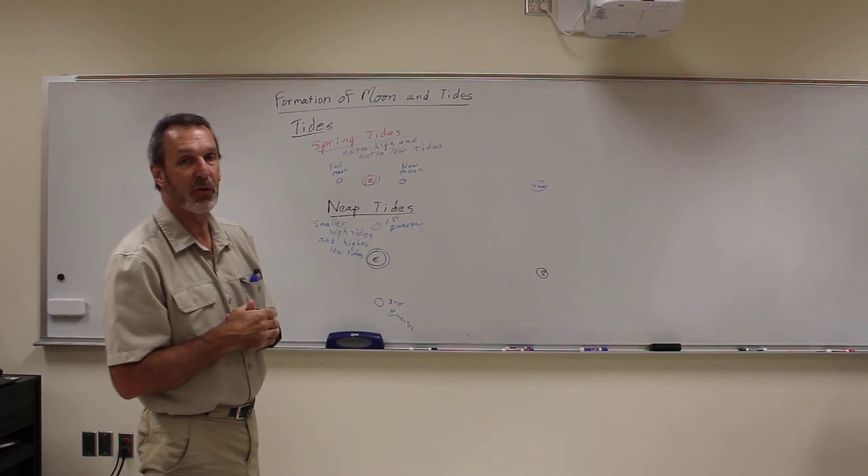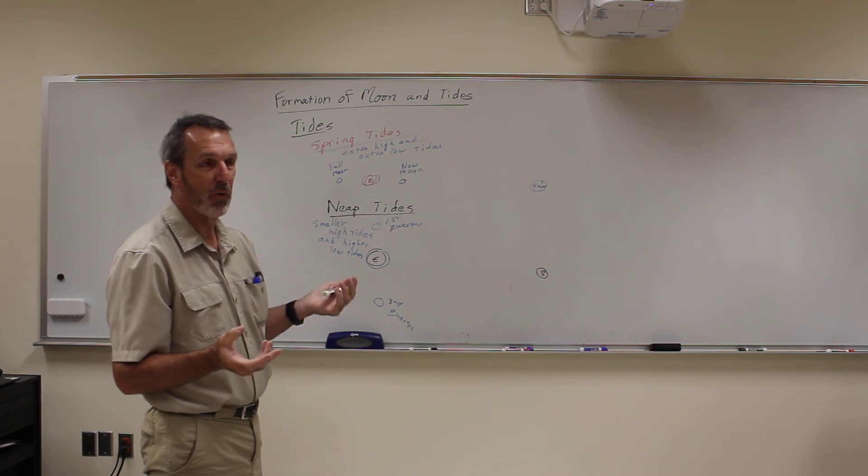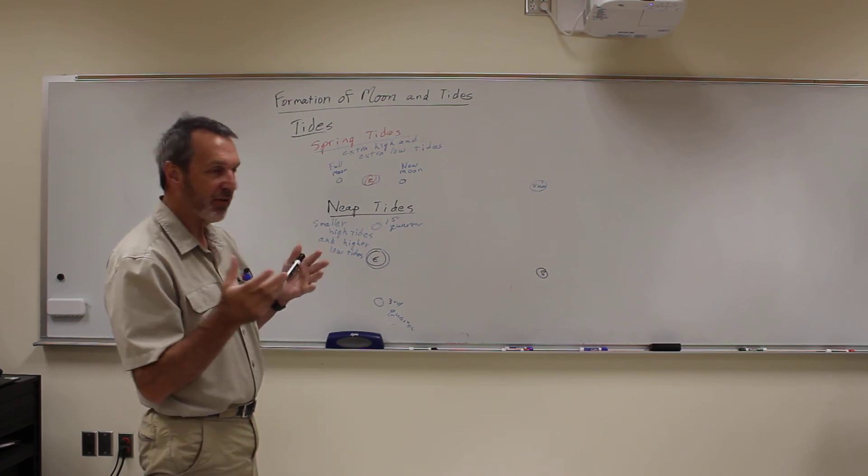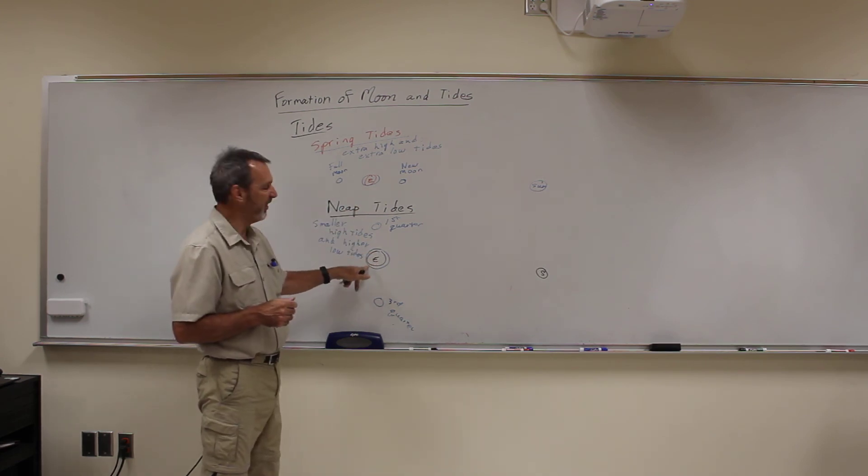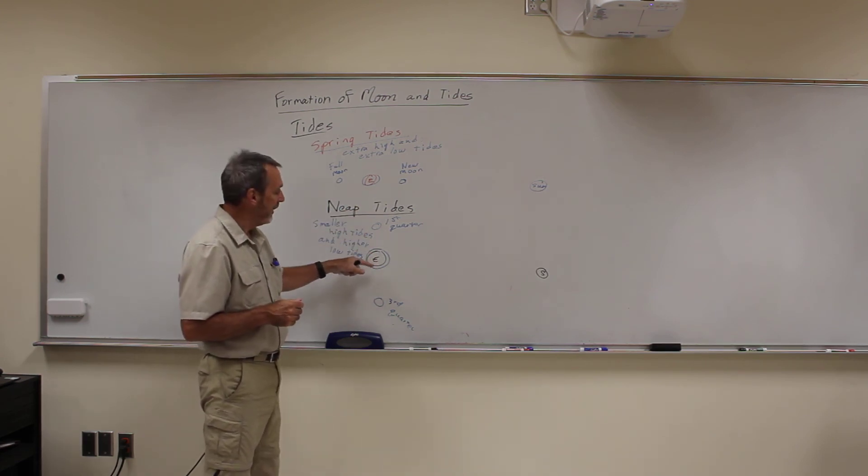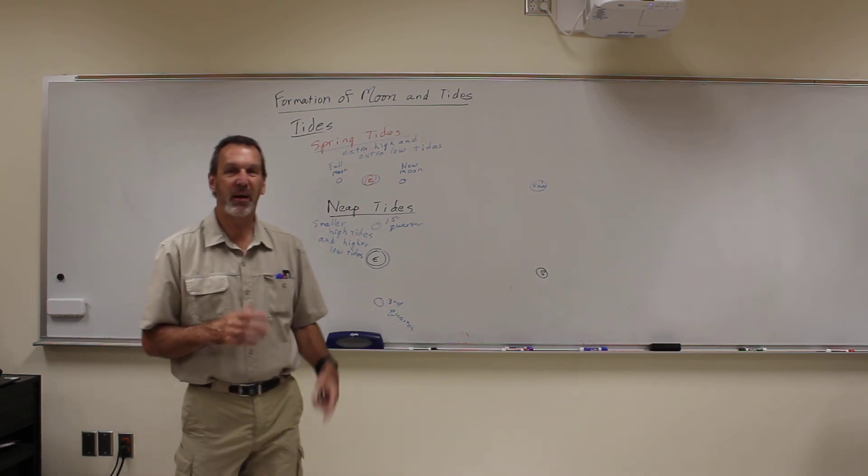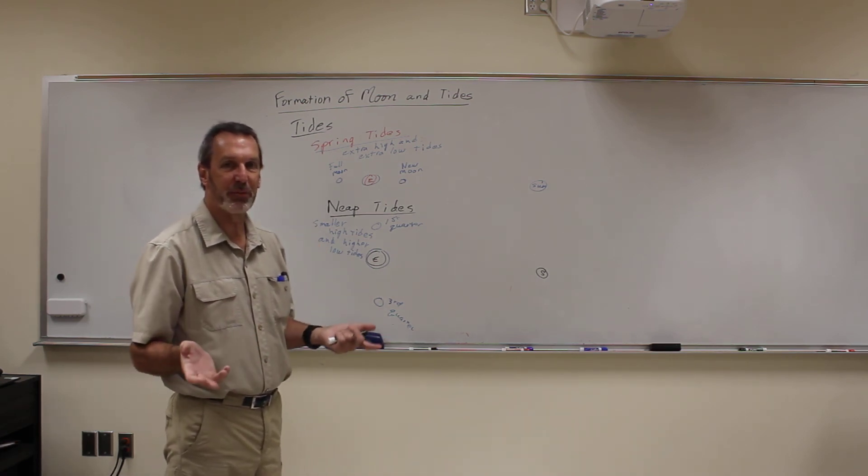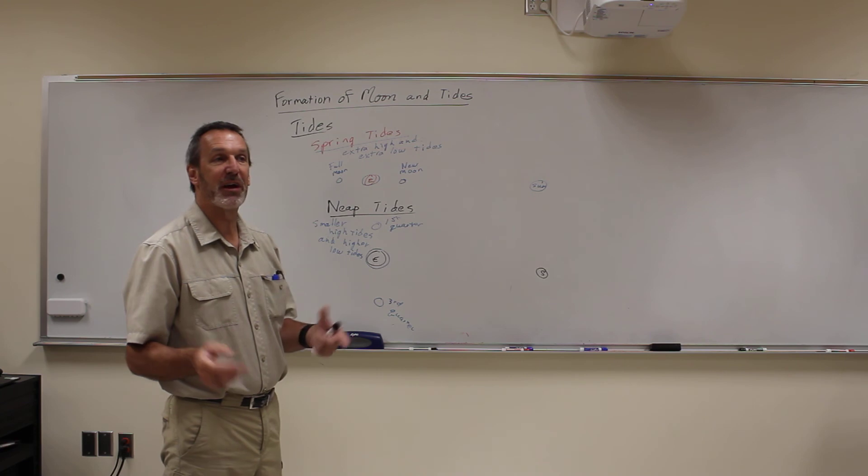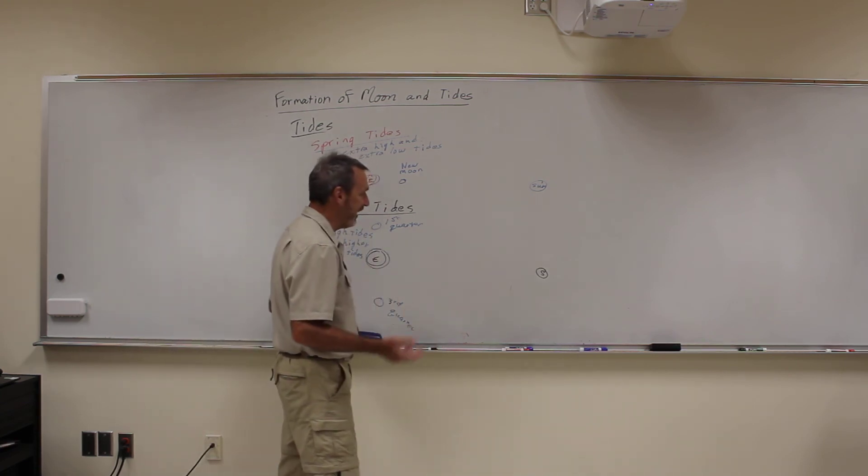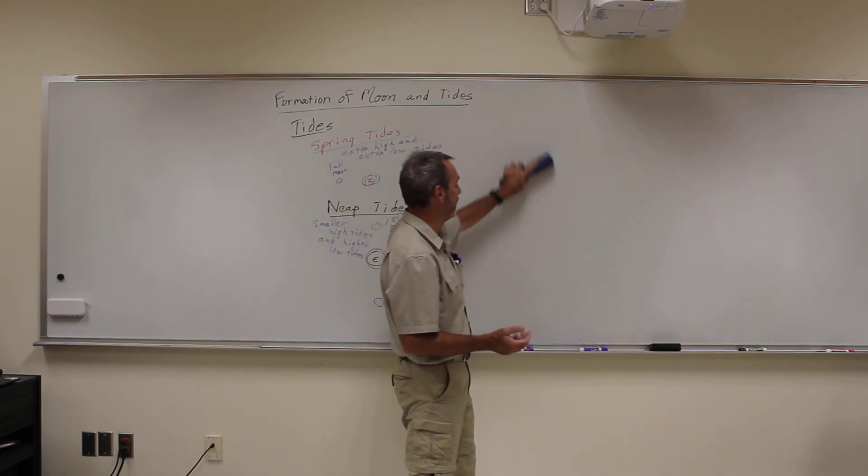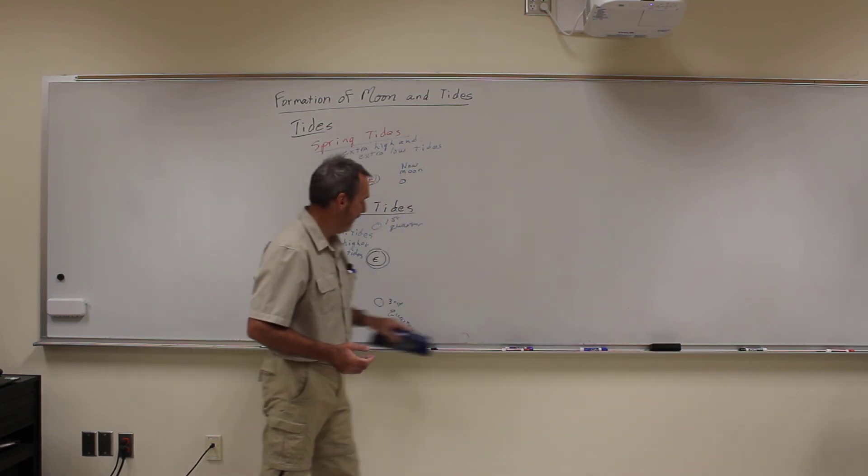But over those billions of years, the moon is actually getting further away and it's slowing down the earth. Essentially it's stealing our angular momentum, and so we're slowing down. Now it's a small effect, it's like a few seconds per million years. But when you start to talk about billions of years, you start to notice that effect. You start to get thousands of seconds, and thousands of seconds are getting close to hours where it changes.